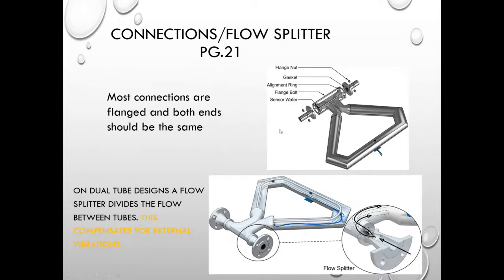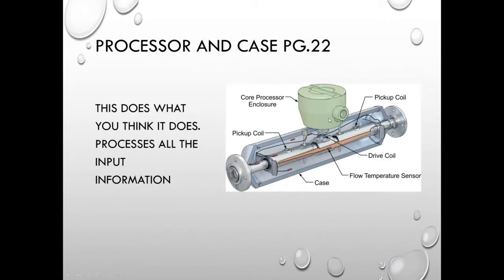For connections and flow splitter: most of the time the connections will be flanged, and they should be the same on both sides. The dual-tube design is probably most common and uses something called a flow splitter, which divides the flow between the two tubes. This helps compensate for mechanical vibrations external to the transmitter. The core processor receives inputs from RTDs, temperature sensors, and pickup coils, and sends outputs to the drive coils. All processing, computations, and configurations are contained inside the processor and case.